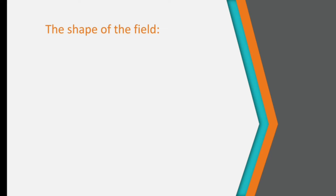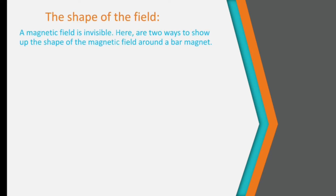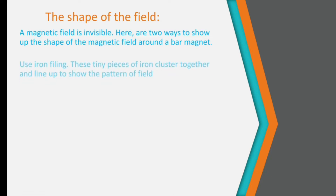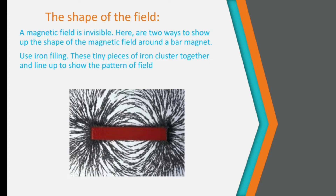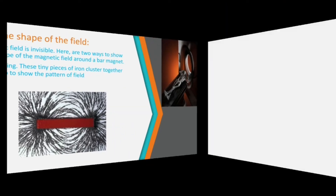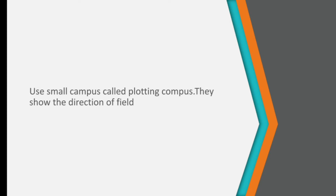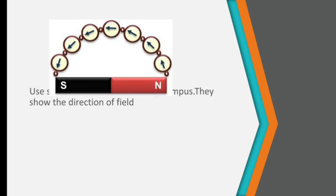Now we will come to know the shape of a magnetic field. A magnetic field is invisible. There are two ways to show the shape of the magnetic field around a bar magnet. The first one is with the help of iron filings — when we sprinkle iron filings on a bar magnet, these tiny iron filings arrange themselves in a pattern, clustering and lining up to show the field pattern. The second method is with the help of a compass needle — when you keep a compass needle near a bar magnet at different positions, you can get a field pattern.